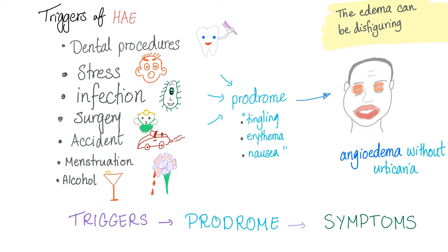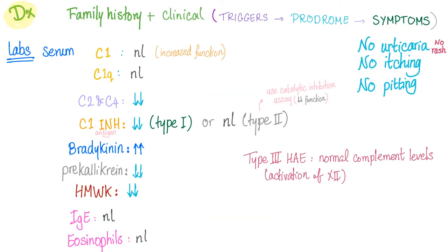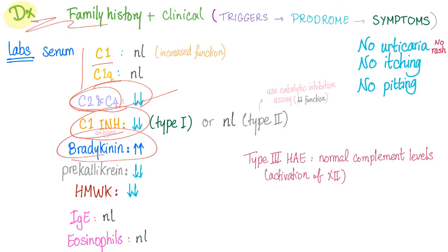There is often a trigger — don't forget dental procedures — and sometimes a prodrome between the trigger and the symptoms. For diagnosis, you need family history and the clinical picture. In the lab: C1 level is normal, C1 function is normal, C1q is normal. C2 and C4 are consumed. C1 inhibitor is low — that's the definition. Bradykinin is high. Pre-kallikrein is low because all of it has been converted to kallikrein. High molecular weight kininogen is low. Eosinophils are normal because this is not an allergy.